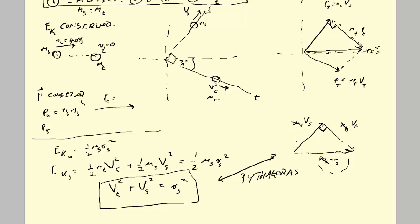Now let's pull the 30 degrees into this triangle. The 30 degrees is the direction the target moves after being struck. Because we have a parallelogram, the two sides are parallel and this is a transversal, so by elementary geometry that angle is also 30 degrees. Bringing it into our right-angle triangle, one angle is 30 degrees and the other is 60 degrees. From here it's pretty easy to solve.